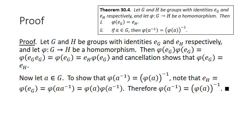Let's look at a brief proof of that theorem. Let G and H be groups with identities E_G and E_H respectively, and let phi from G to H be a homomorphism. We can say phi of E_G times phi of E_G equals phi of E_G times E_G — that's the homomorphism property — which is just phi of E_G. We can introduce E_H on one side since phi of E_G is an element of H, so we can multiply by the identity in H. We can then cancel phi of E_G from both sides, showing that phi of E_G equals E_H.